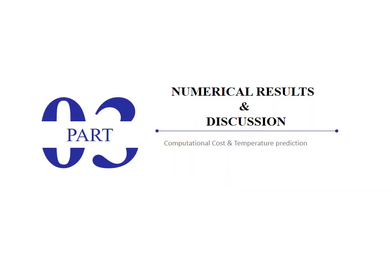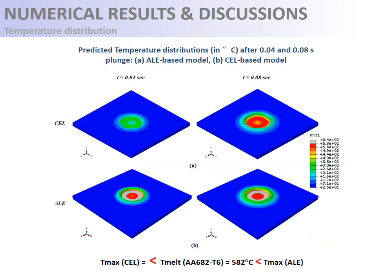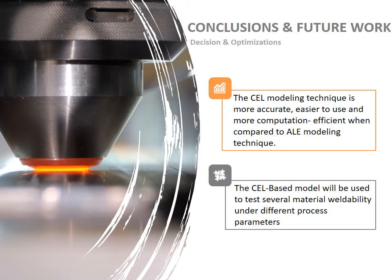After explaining the specificities of each modeling technique, I will compare the numerical results to decide the most efficient technique for reproducing the friction stir spot welding process. The first indicator is computational cost: the ALE-based model has a very high computational cost compared to the CEL model, possibly due to the large number of elements and mesh rezoning during calculation. For the temperature results, the ALE model predicts temperatures exceeding the melting point of the 6000 aluminum alloy, which is not the real case for the current process parameters. To conclude, the CEL modeling technique is more accurate, easier to use, and more computationally efficient than the ALE-based technique. As future work, we will use the CEL formulation to test several material weldabilities under different process parameters.